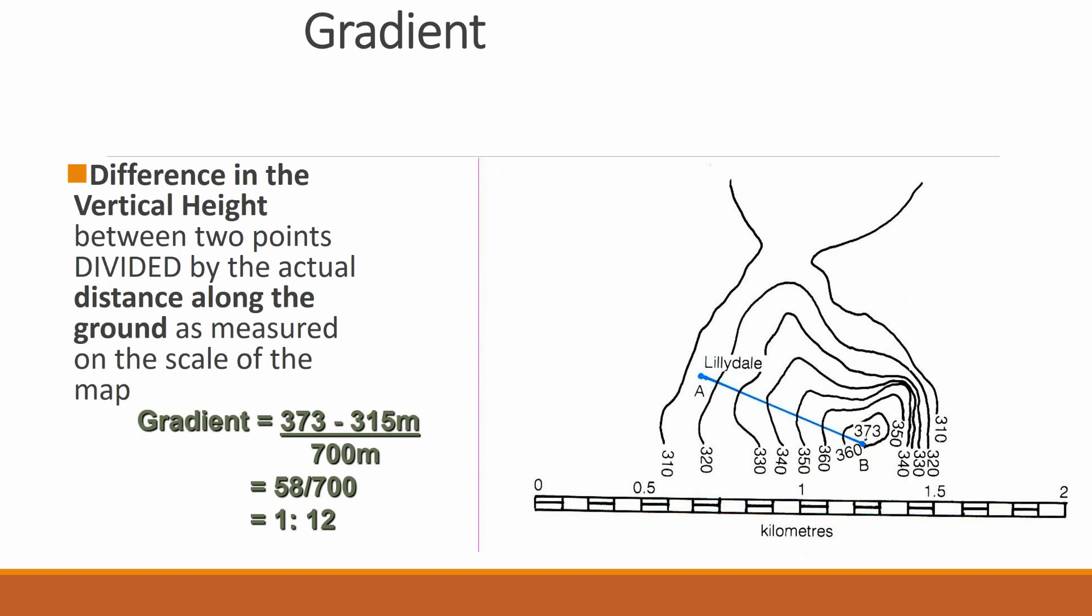Here is an example where we use contour lines that can be seen on the map. And we can see that the change in elevation is, or the highest elevation, is 373 meters. And if we travel from Lillydale to the height or the top of the hill, the height of Lillydale is 315 meters. So 373 meters minus 315 meters is 58 meters. Then if we travel from Lillydale to the top of the hill, we have traveled 700 meters. Therefore, 58 meters over 700 meters equals a ratio of 1 to 12. That means that for every 1 meter that we have climbed in height, we need to walk 12 meters to gain that altitude. Every 12 meters, there's an elevation of 1 meter.